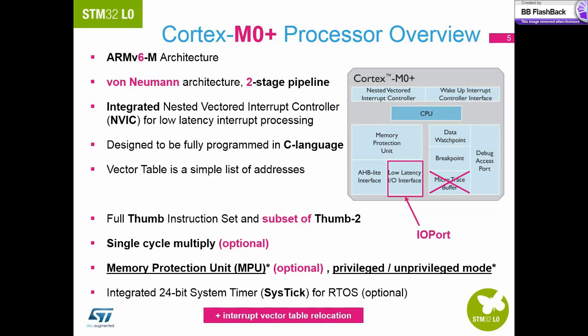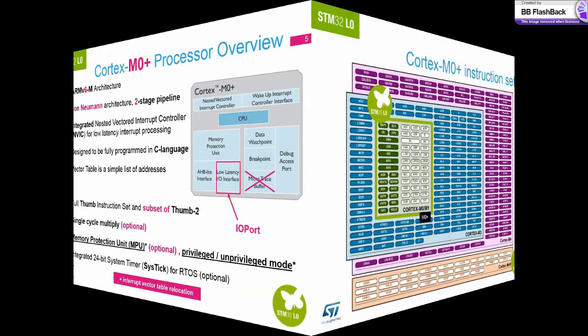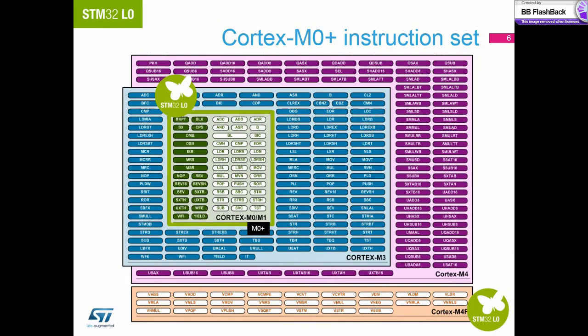As you may have noticed from the previous slide showing the bus matrix, we have also included the low latency IO interface for directly connecting the GPIOs to the core. The instruction set for the Cortex M0+ is a subset of the other Cortex M cores. Any code written for the Cortex M0+ can be recompiled for use on any of the other cores at a later date if required.